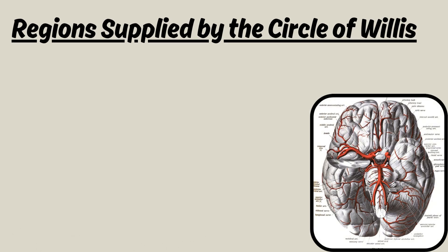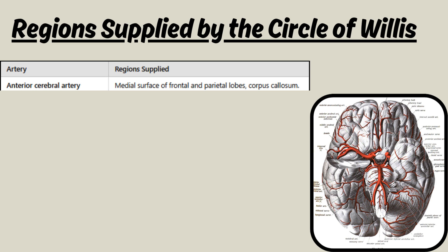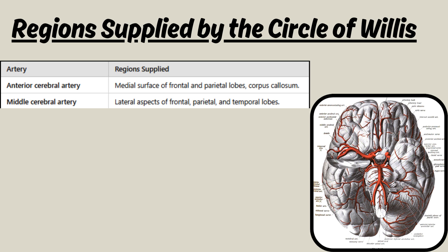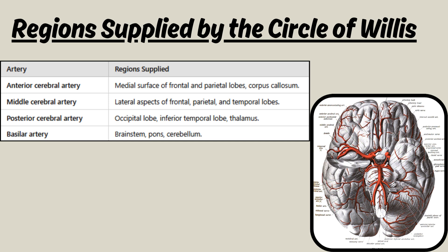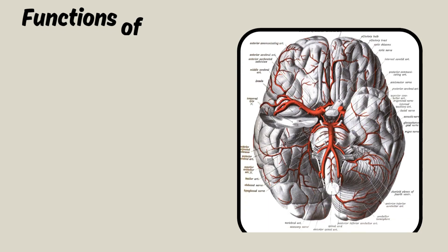The anterior cerebral artery supplies the medial surface of the frontal and parietal lobes and the corpus callosum. The middle cerebral artery supplies the lateral aspects of the frontal, parietal, and temporal lobes. The posterior cerebral artery supplies the occipital lobe, inferior temporal lobe, and thalamus. The basilar artery supplies the brainstem, pons, and cerebellum.